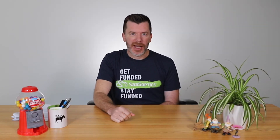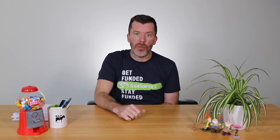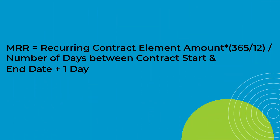In B2B SaaS, sales negotiations and exceptions pop up far more often than not, so we use the following more accurate formula. MRR equals your recurring contract element amounts times 365, divided by 12, divided by the number of days between the contract start date and the contract end date plus one day.